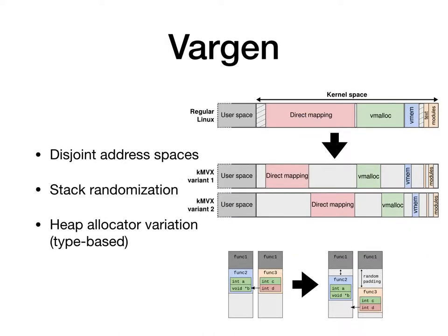The third component, variant generation, creates diversified kernels at compile time — for example, ensuring that the memory layout is different between variants. We utilize strategies such as disjoint address spaces, stack layout randomization, and heap allocator variation to achieve diversity in the kernels. Due to these diversification strategies, exploitation of infoleaks will leak different data, allowing us to detect this divergence.